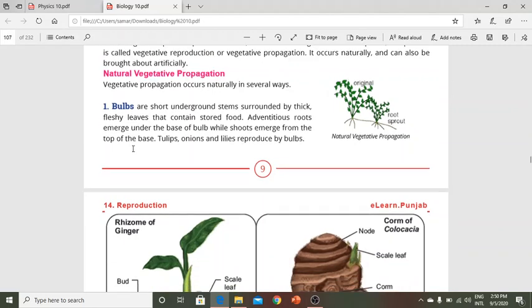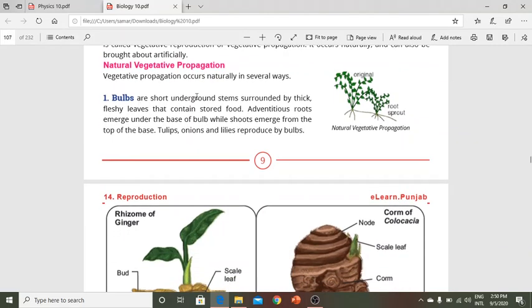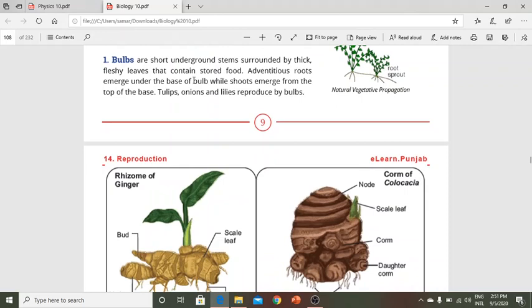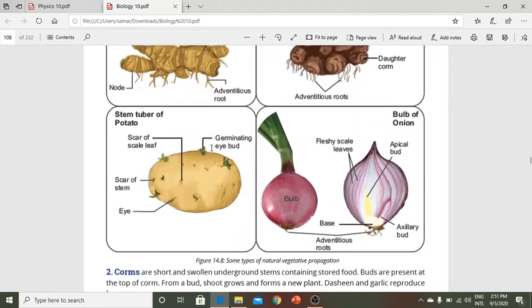Natural vegetative propagation includes bulbs. Bulbs are short underground stems surrounded by thick fleshy leaves that contain stored food. Adventitious roots emerge from the base of bulbs, and shoots emerge from the top. Tulips, onions, and lilies reproduce through bulbs.